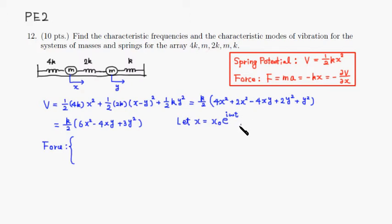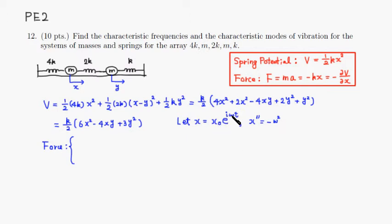Taking the second derivative of x with respect to time: each differentiation brings down a factor of iω, so the second derivative gives i² ω² x₀ e^(iωt) = −ω² x. So the acceleration of the first mass is −ω²x.